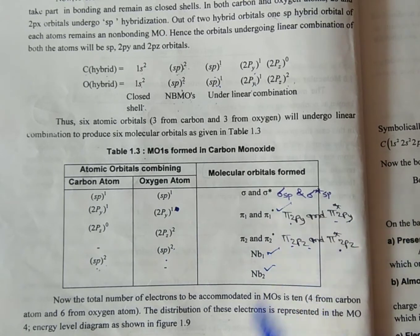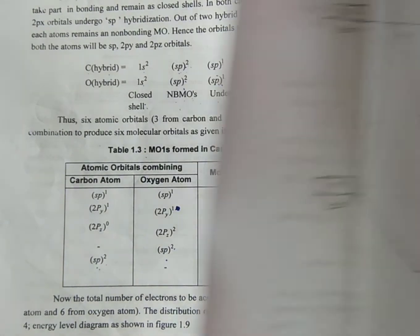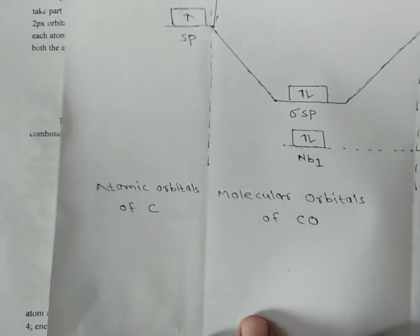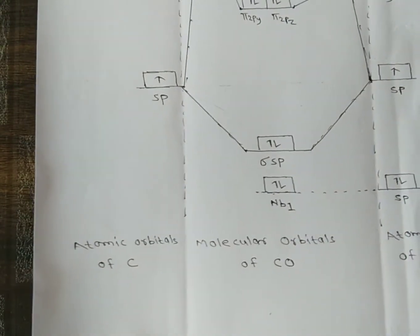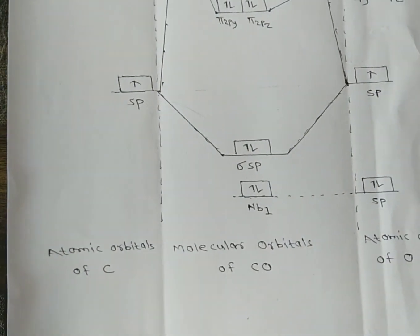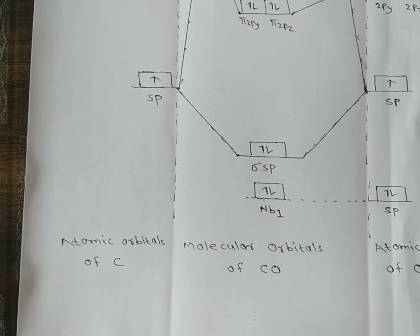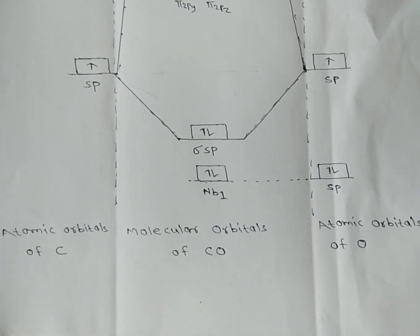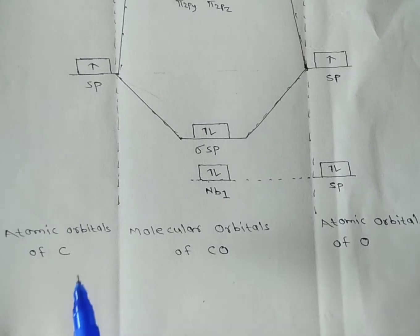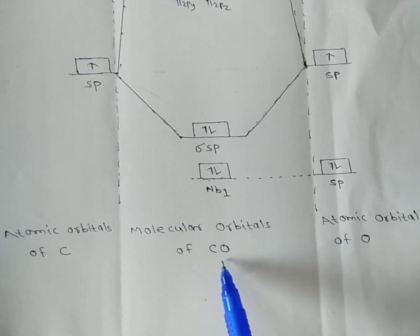This is the molecular orbital diagram for the heteronuclear diatomic molecule CO. The heterodiatomic molecule has 2 orbitals: 1 carbon and 1 oxygen. The non-bonding orbital will not be used in bonding. The atomic orbitals of carbon and oxygen form the molecular orbitals of CO.